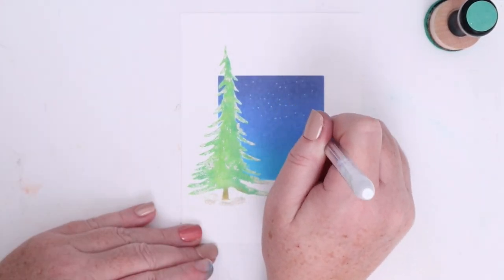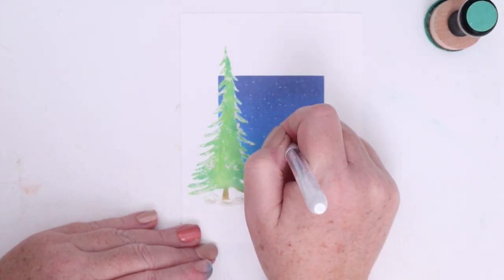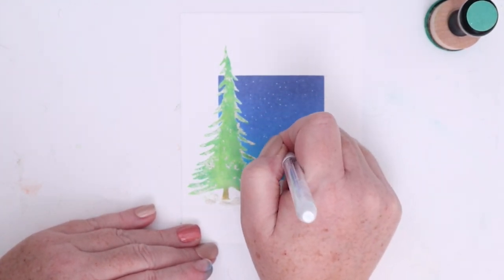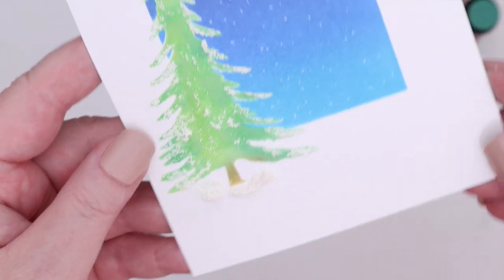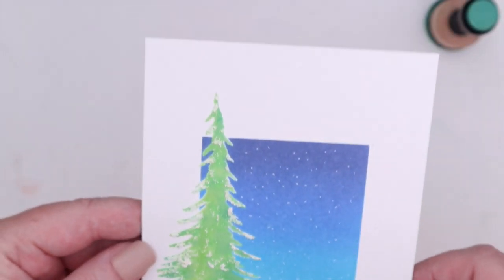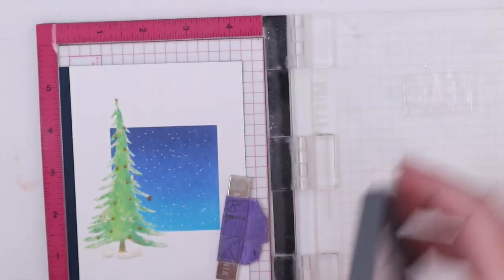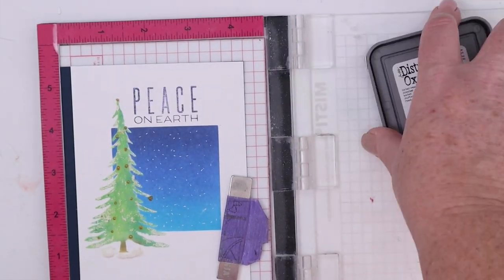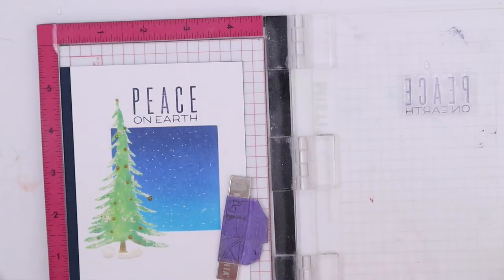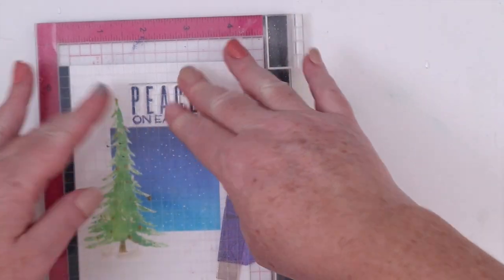Once all of that is dry, I cut the panel down and adhered it to dark blue cardstock. Now I'll place the panel inside my MISTI and use some Chipped Sapphire ink to stamp a sentiment from Waffle Flower's Big Dots Holiday stamp set. I added a few Tonic Studios new bow drops in gold as ornaments on the tree and a few more larger white dots with the Pentel Milky Pop white gel pen for snow and stars.